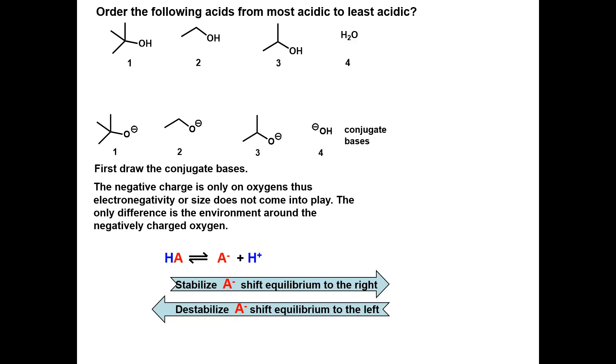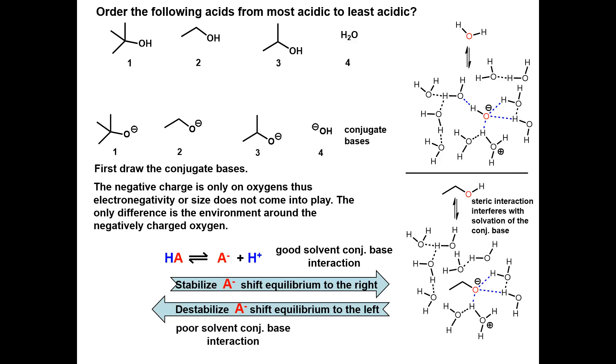The solvent stabilizes the negatively charged conjugate base by helping to disperse the charge. Thus, if the conjugate base is unhindered and can interact with the solvent well, the equilibrium will shift to the right. If there is poor interaction with the solvent because of steric hindrance caused by alkyl groups, the equilibrium is shifted to the left.